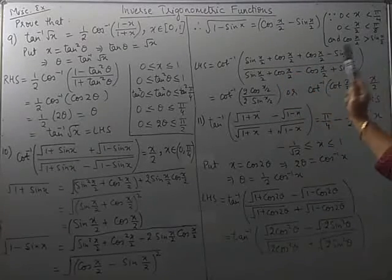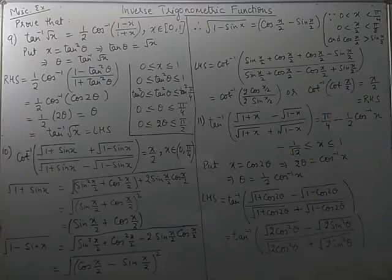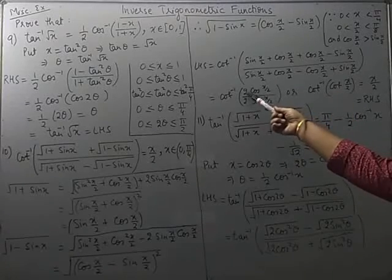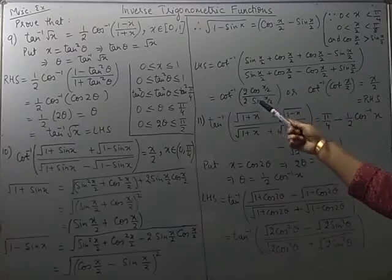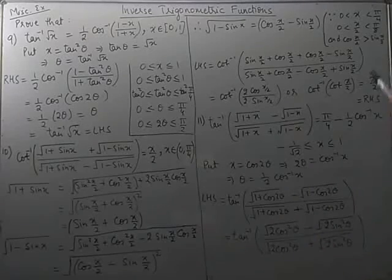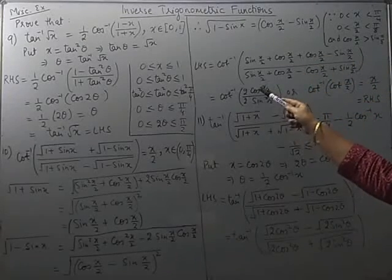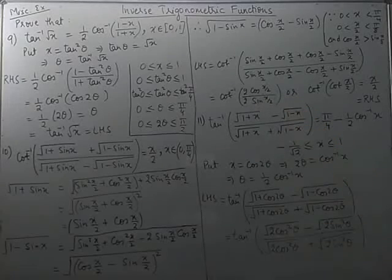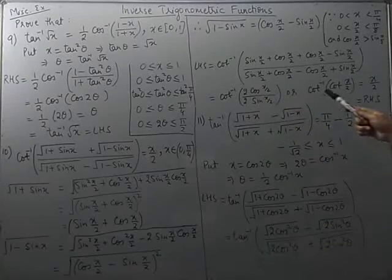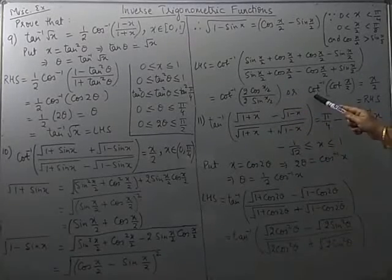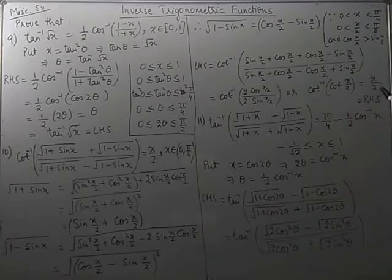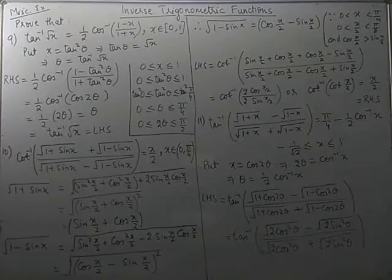Now quickly doing the substitution and cancelling terms: in the numerator sin(x/2) gets eliminated, and in the denominator cos(x/2) gets eliminated. We are left with 2cos(x/2) over 2sin(x/2). The 2s cancel, and cos(x/2) over sin(x/2) is cot(x/2). So we can replace cot inverse(cot(x/2)) by x/2, which is the required right hand side.